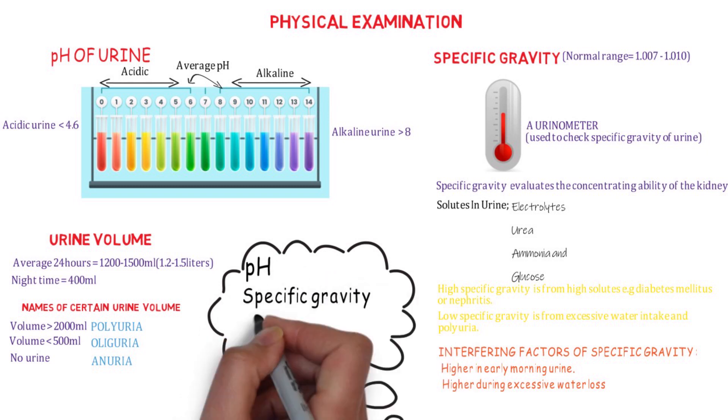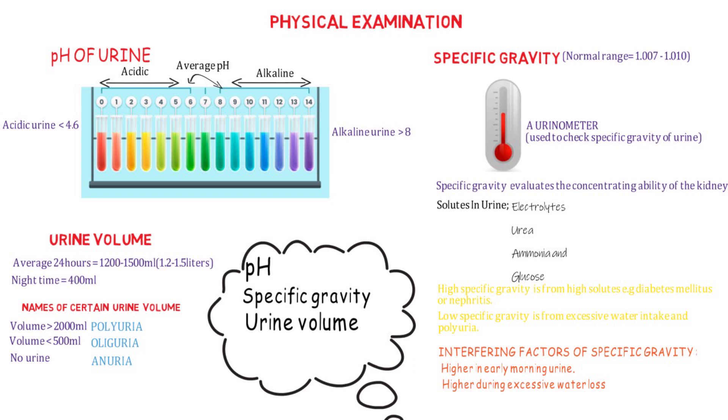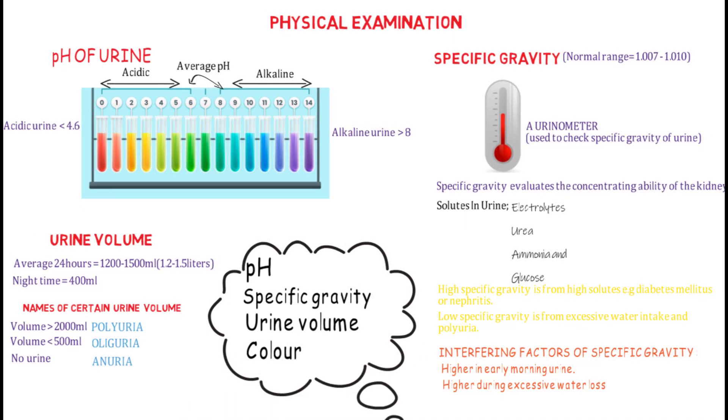The pH of urine, specific gravity, urine volume, and the color are various parameters used for the physical examination of renal function tests. In our next video, we'll be looking at the biochemical examination and microscopic examination.